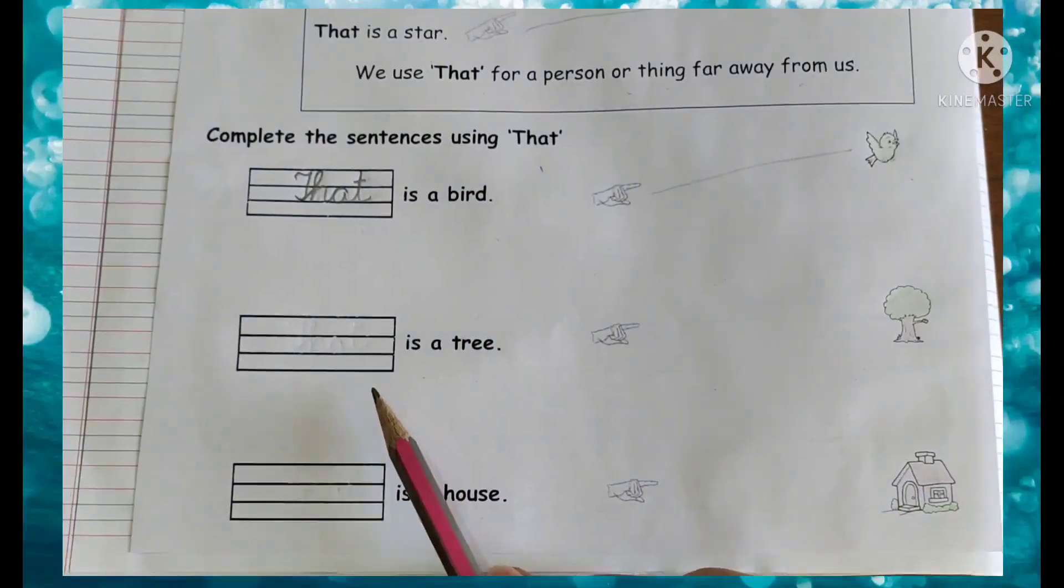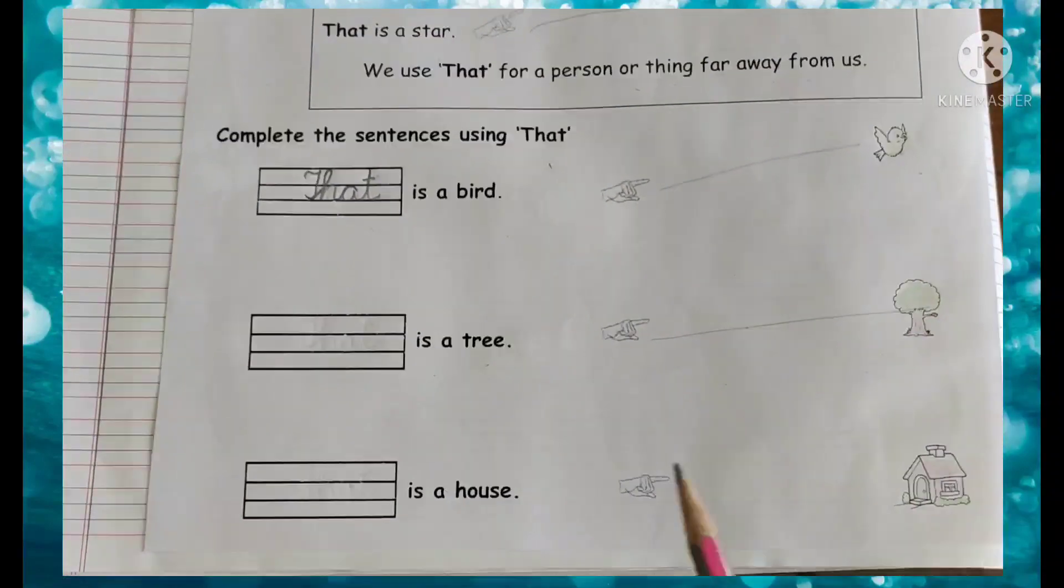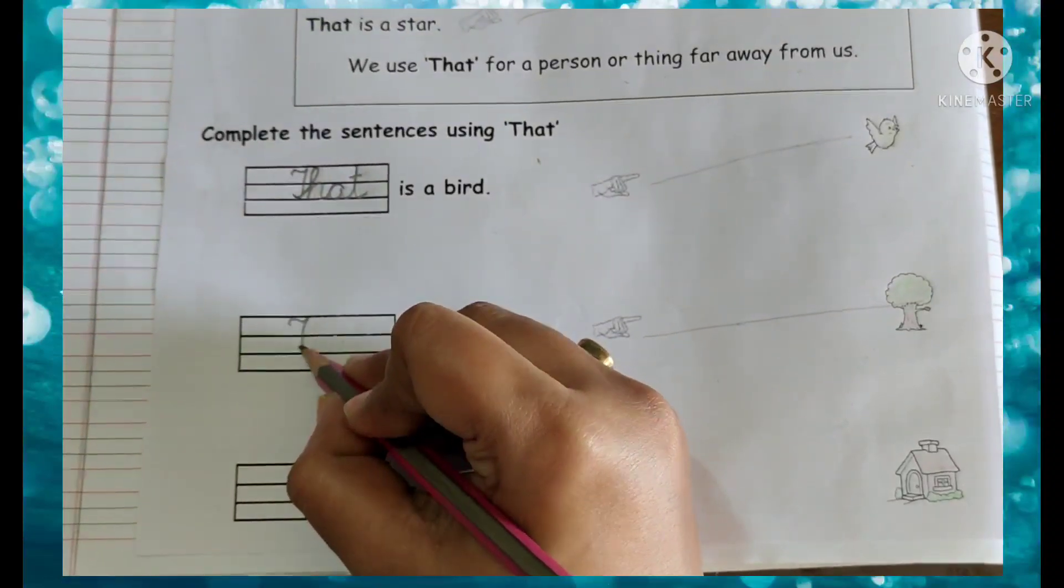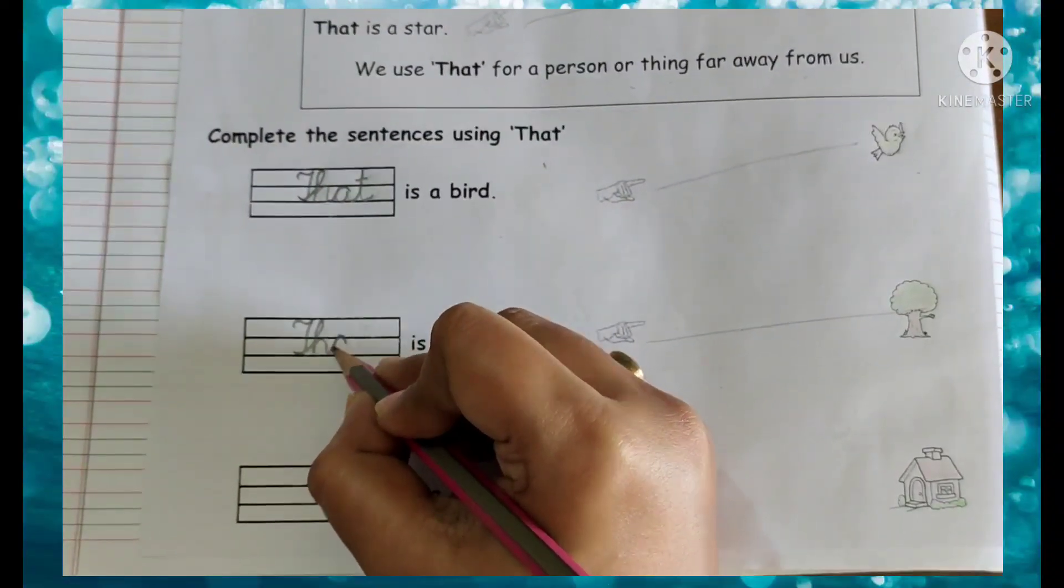Similarly, the second one, that is a tree. The tree also is far. So I will write here, that. That is a tree.